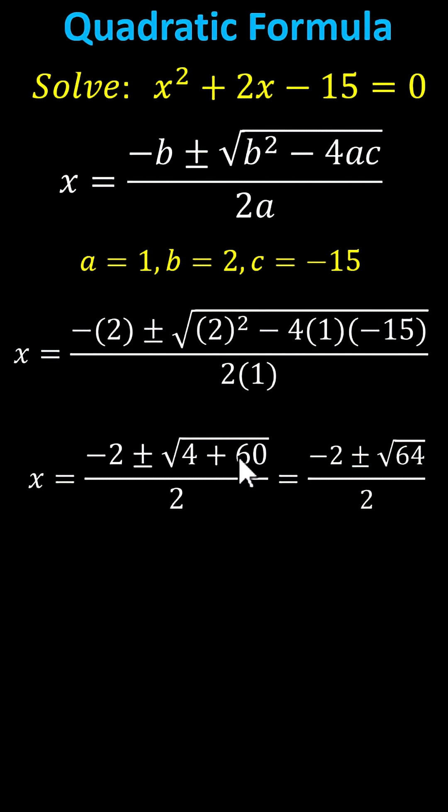4 plus 60 equals 64, giving us the square root of 64, which is equal to 8 because 8 times 8 equals 64. We have x equals negative 2 plus or minus 8, all divided by positive 2. Because the square root simplified perfectly, we now need to add and subtract to find the real rational solutions.